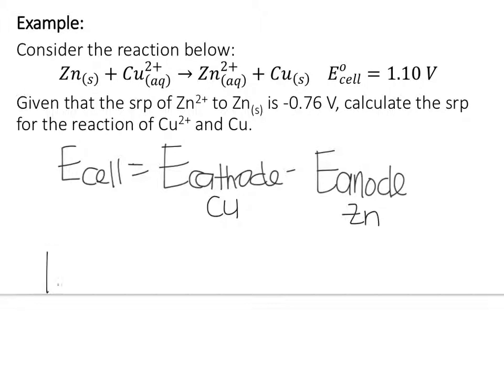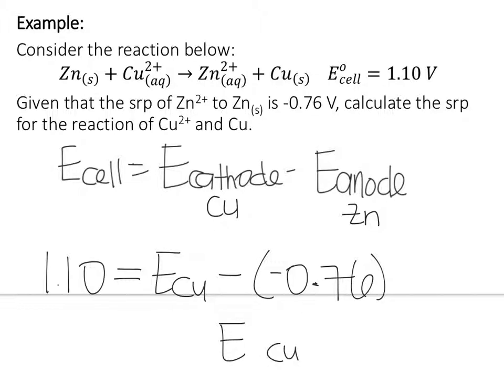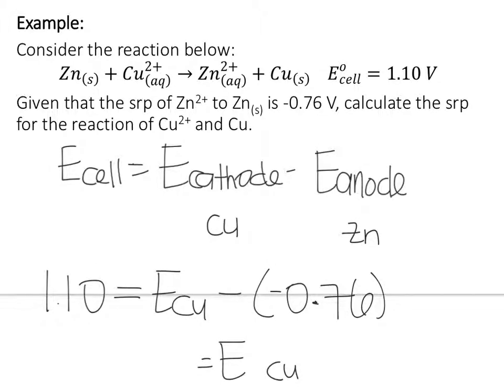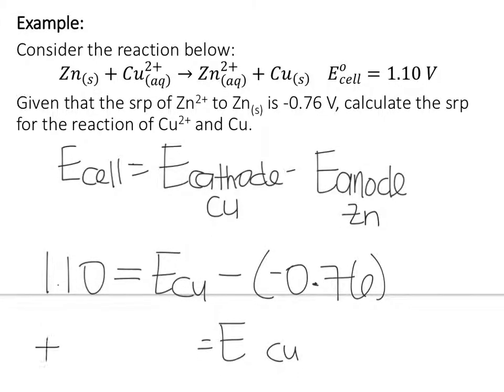So, that says that 1.10 is equal to our E of our copper, if you will, minus negative 0.76. Well, I'm pretty sure you can do that math. Your cell potential of copper is positive 0.34 volts.